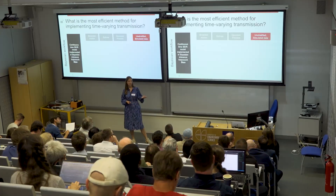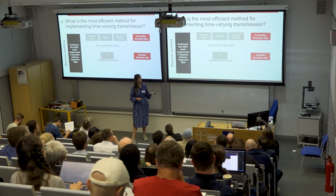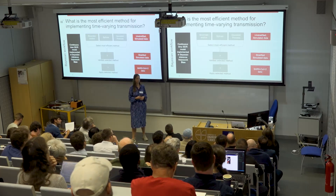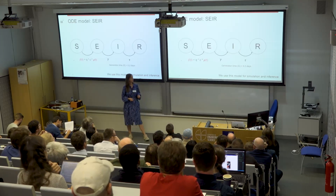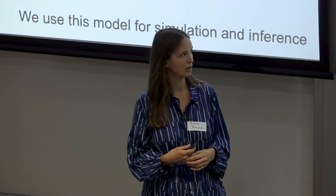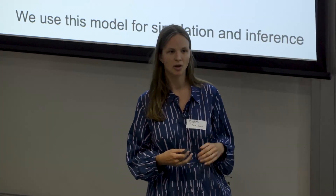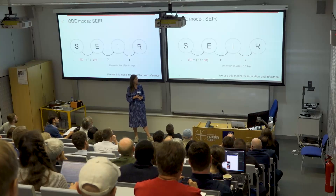The main question we started the project with was: how should we implement this time-varying transmission as efficiently as possible? For this we constructed a Bayesian workflow comparing three different ways of implementing the time-varying transmission. We first validate on unstratified simulated data, select the most effective method, validate again with stratified simulated data, and then apply the selected method to real SARS-CoV-2 data. In our model we keep the probability of infection upon contact and number of contacts per day constant, and model the rho parameter as a reduction of the initial transmission rate over time.